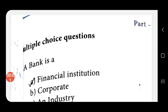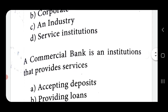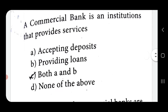Hello students. Class 12 economics lesson 6, one mark questions. A bank is a financial institution. A commercial bank is an institution that provides services like accepting deposits and providing loans.